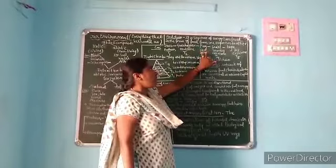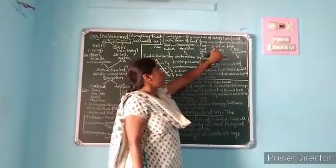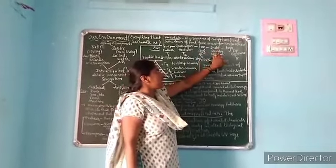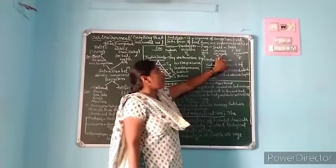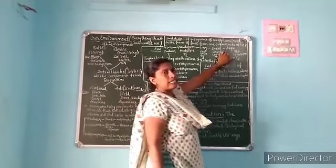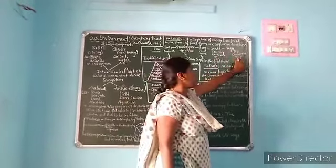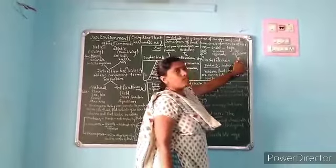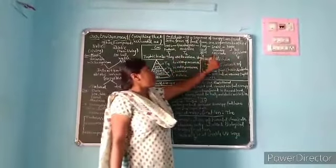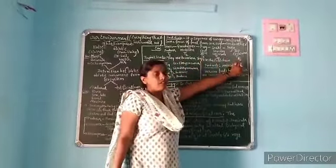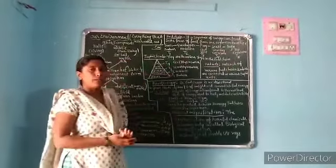Snake is at the secondary trophic level, T4, carnivores. Eagle is top carnivore, T5. So T1, T2, T3, T4, T5 are the trophic levels.